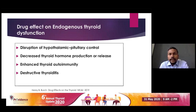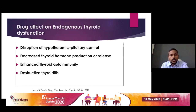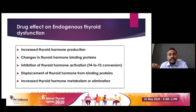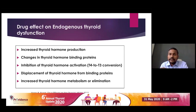Endogenous thyroid dysfunction can involve disruption of hypothalamic-pituitary control, decreased thyroid hormone production or release, enhanced thyroid autoimmunity, and destructive thyroiditis. There are also causes like increased thyroid hormone production, changes in thyroid hormone binding proteins, and thyroid hormone activation — the T4 to T3 conversion is affected by many drugs. Displacement of thyroid hormone from binding proteins and, very rarely, increased accelerated metabolism of thyroid hormone and more elimination are also possible.